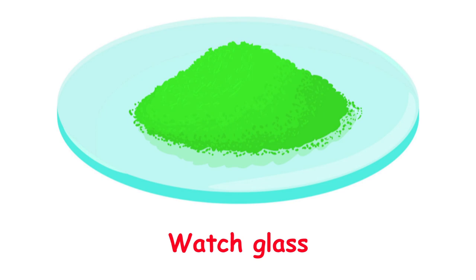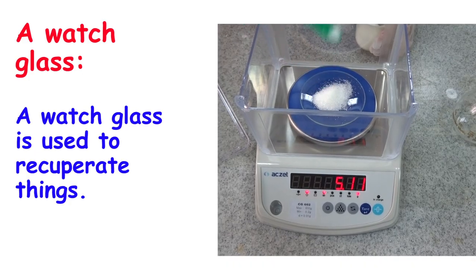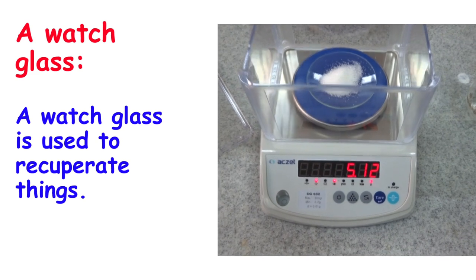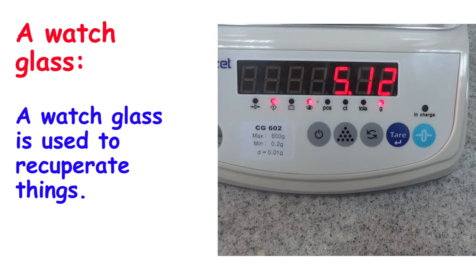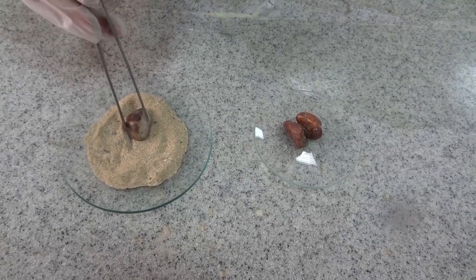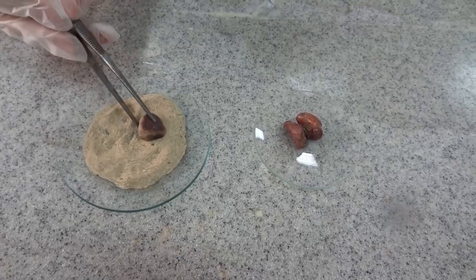A watch glass is used to recuperate things. It can be used to hold the chemical on the balance to weigh its mass, or it can be used to cover the top of the beaker. In this example, the watch glass is used to recuperate the small drops.